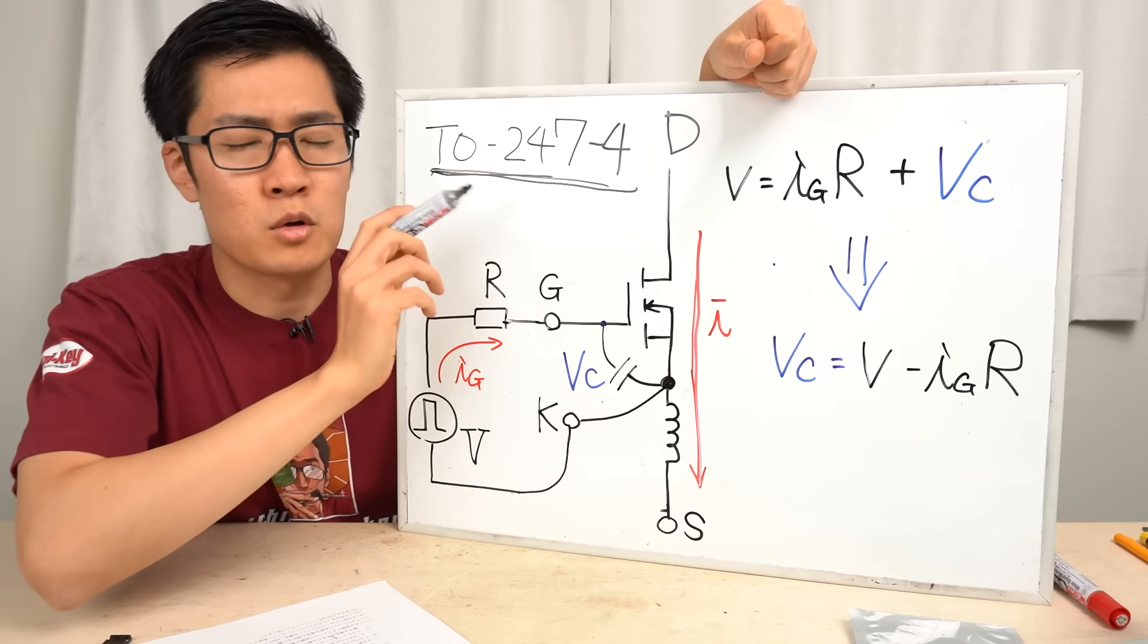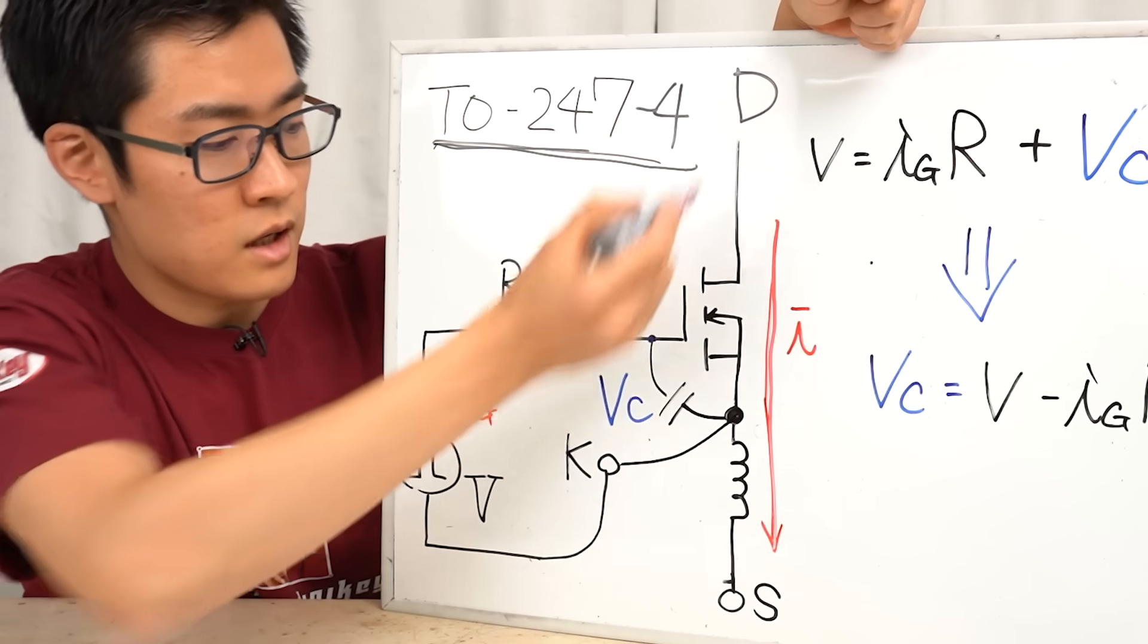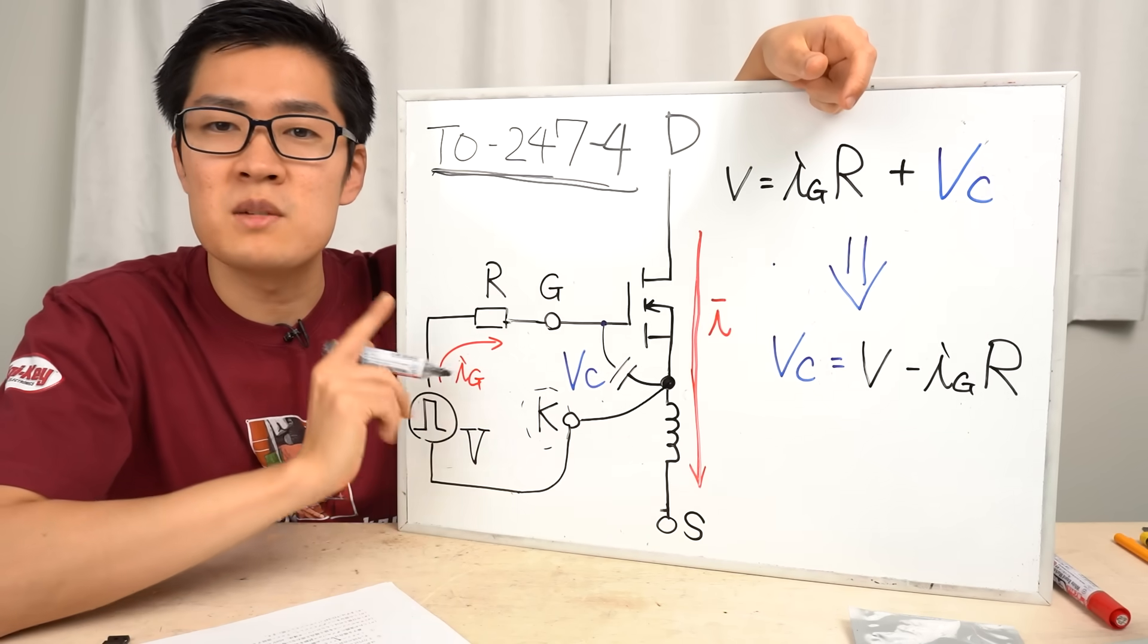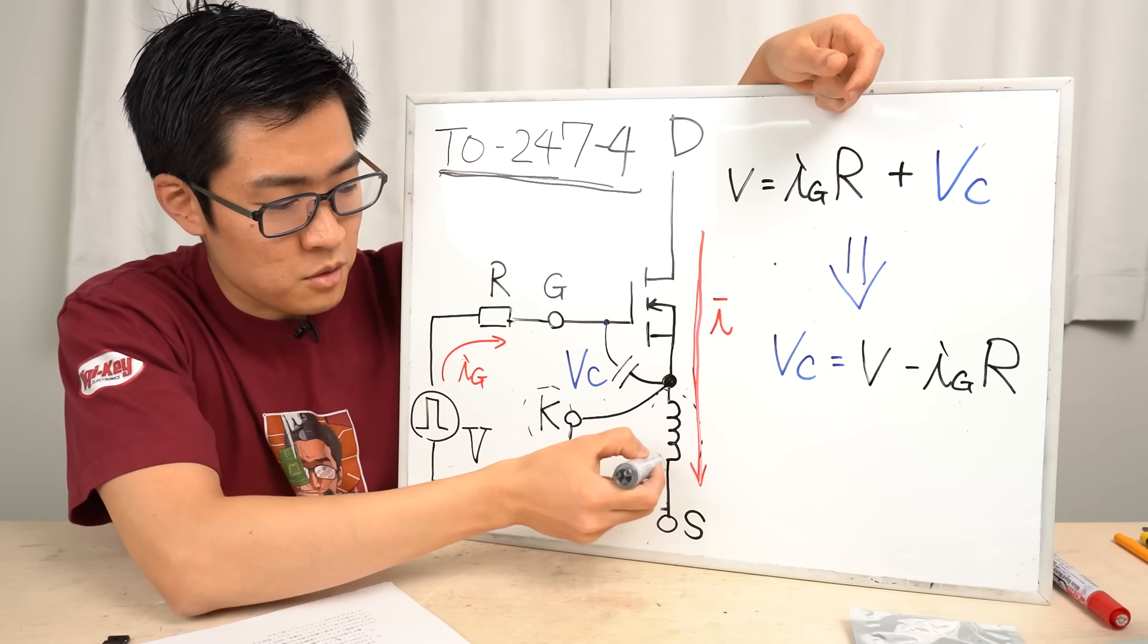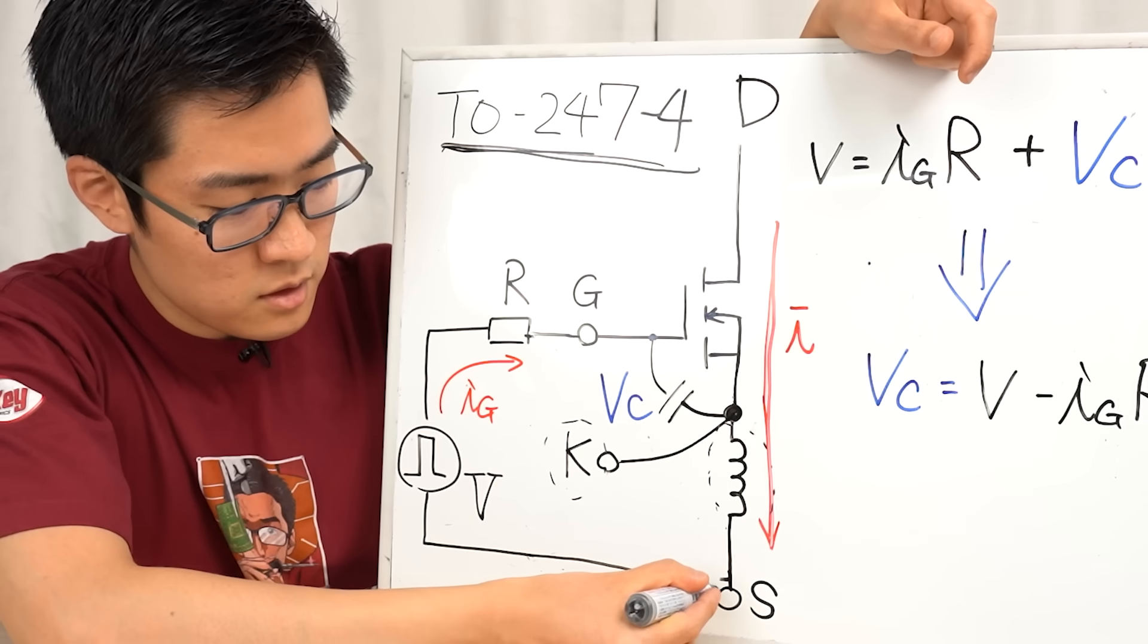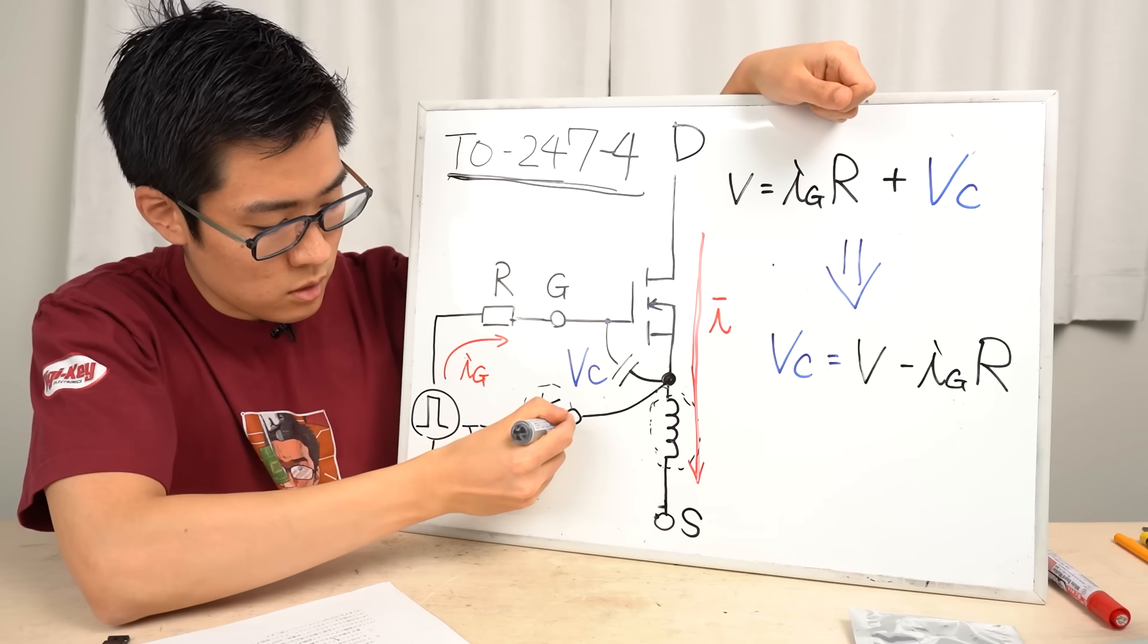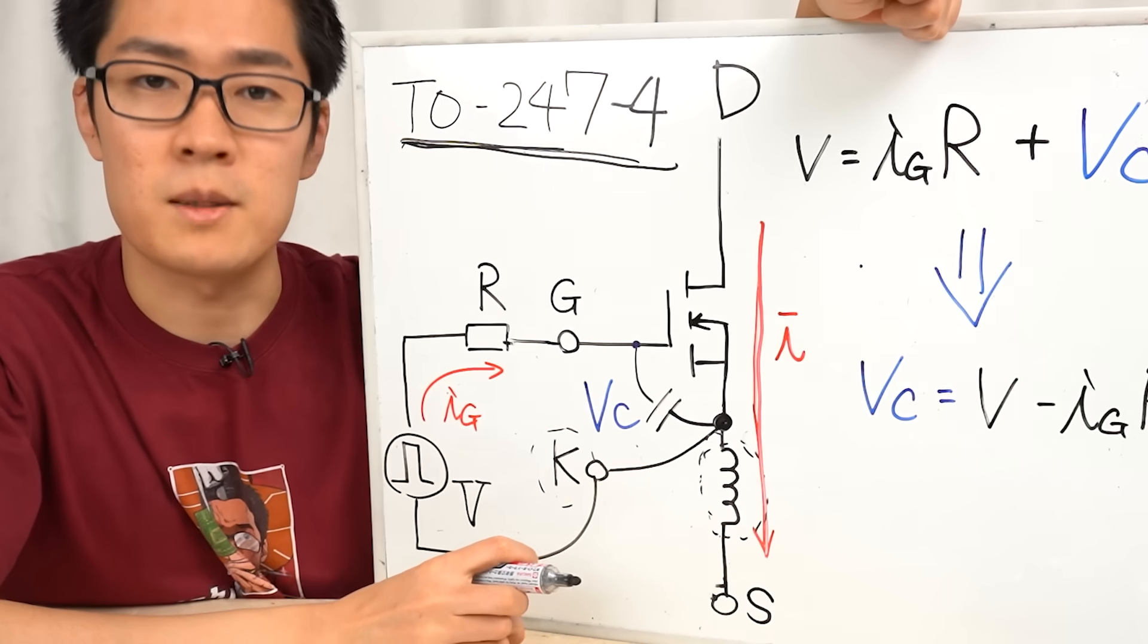Let's have a look at TO247-4. This is its configuration. What is different about this circuit is that it uses a four-terminal MOSFET, which includes Kelvin Terminal in addition to gate, source, and drain. The key point of a power semiconductor package with Kelvin Terminal is that the current for the gate drive does not pass through the parasitic inductance where large currents flow. As for the three-terminal package, it was directly connected here. Therefore, the parasitic inductance where large currents flow had a significant effect. However, when Kelvin Terminal is used, the circuit looks like this. So, the influence of the parasitic inductance will be mostly eliminated.